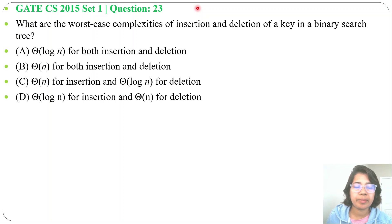Let's solve one previous question of BST. This question was asked in GATE CS 2015, Set 1, Question number 23: What is the worst case complexity of insertion and deletion of a key in a binary search tree? Four options are given.